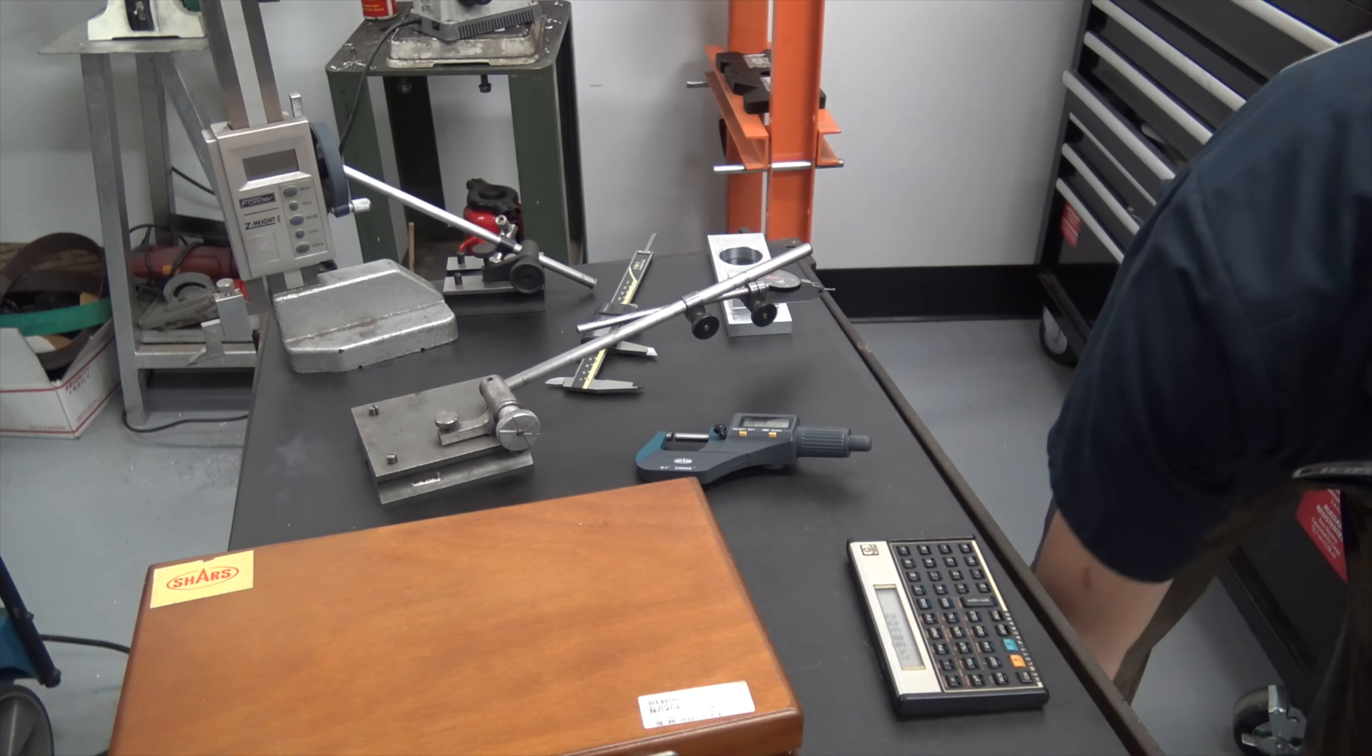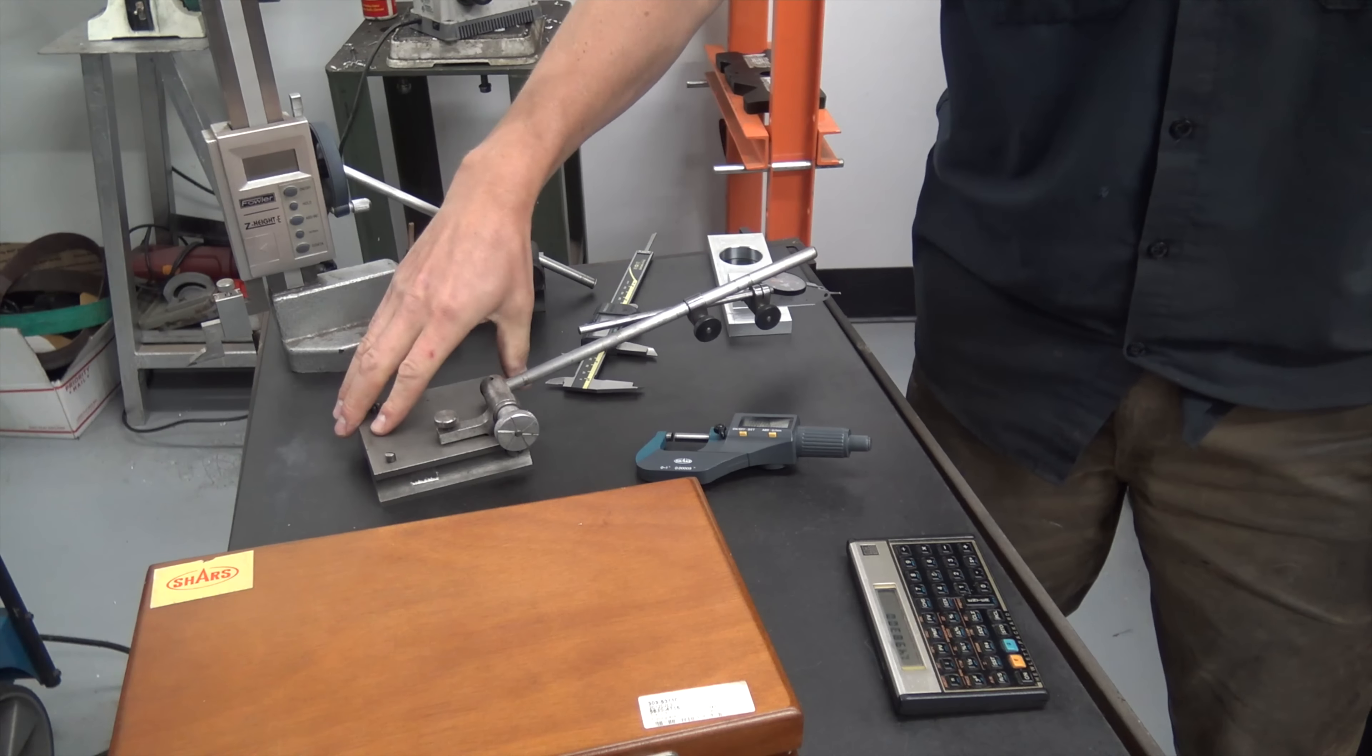You need what's called a height gauge, right here, or a surface gauge. Buy this used on eBay, absolutely. You can buy one new if you want, but I would say buy this used.